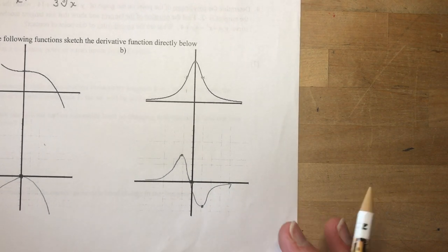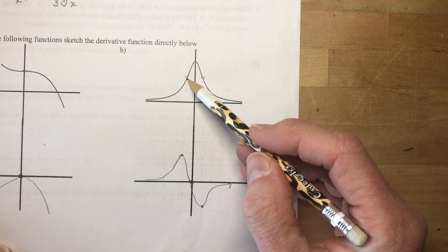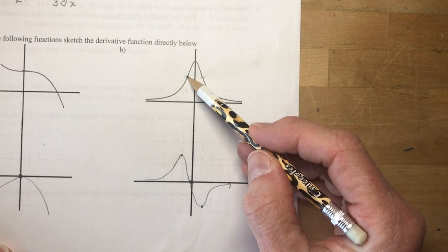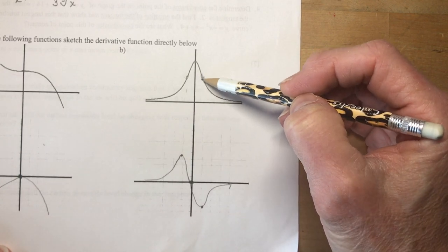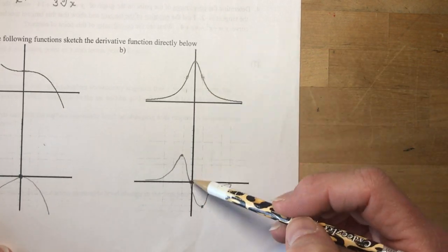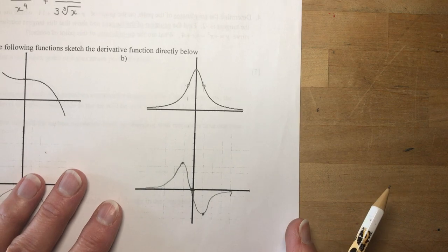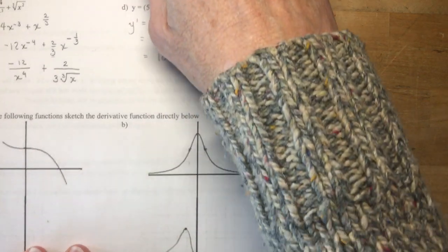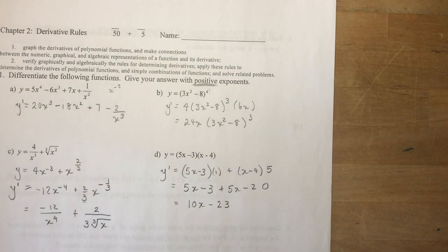That was six marks — wouldn't you like to have had that? The most positive point is the maximum, the most negative is the minimum, and you look for the zeros.